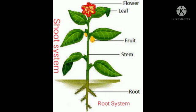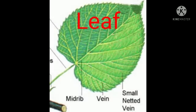The parts of the shoot system are stem, fruit, leaf, and flower. The first part we are going to discuss is the leaf. Leaves are the most important part of a plant as they prepare food for the plant, so leaves are also called the kitchen of plants. Most leaves are green in color, but in some plants they are present in different colors.